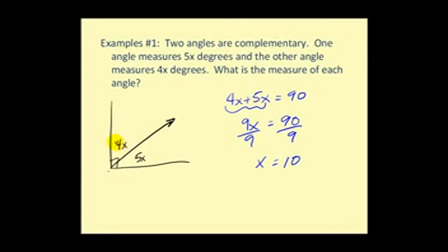So if this angle is 4x or 4 times 10, here we have 40 degrees and here we'd have 5 times 10 or 50 degrees.